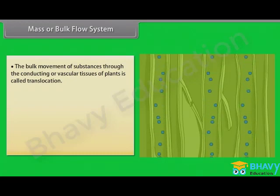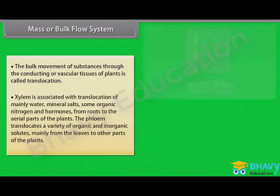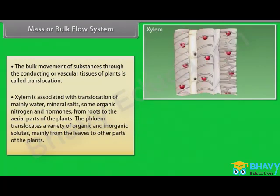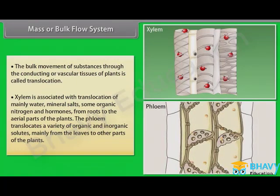Higher plants have highly specialized vascular tissues: xylem and phloem. Xylem is associated with translocation of mainly water, mineral salts, some organic nitrogen, and hormones from roots to the aerial parts of the plants. The phloem translocates a variety of organic and inorganic solutes, mainly from the leaves to other parts of the plants.